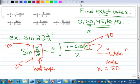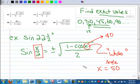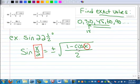Alright, so let's work this problem right here. So we're given the sine of 22 and a half and we want to find the exact value.